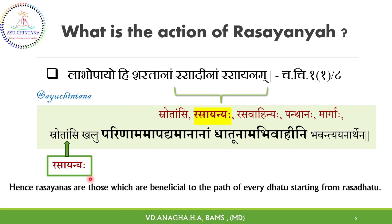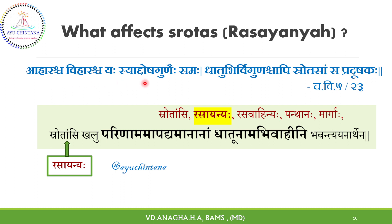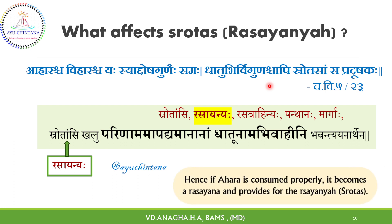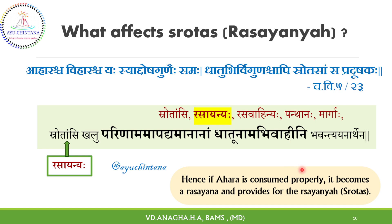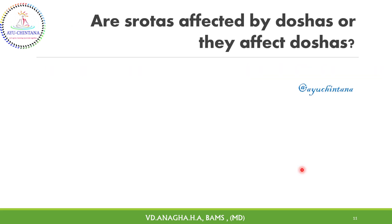Rasayanas are those which are beneficial to the path of every Dhatu, starting from Rasadhatu. Ahara and Vihara are two roots or main reasons through which samasthiti or dushti of Shrothis or Rasayanis can occur. Hence, if Ahara is consumed properly, it becomes a Rasayana and provides for the Rasayanyaha, i.e. the Shrothis. If Ahara and Vihara are not consumed appropriately, they definitely alter or cause imbalance in Doshas. So, the question is: are Shrothis affected by Doshas or do they affect the Doshas? Let us understand the Bilugatya Sutra.